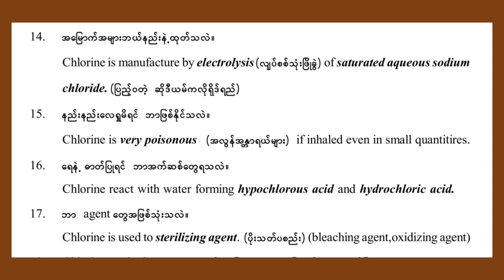Chlorine is very poisonous if inhaled even in small quantities. Chlorine reacts with water forming hypochlorous acid and hydrochloric acid. Chlorine is used as a sterilizing agent, hydrogen acid, and oxidizing agent.